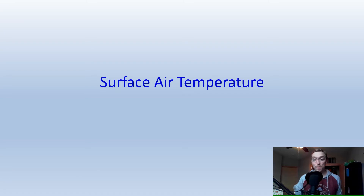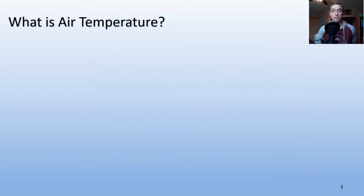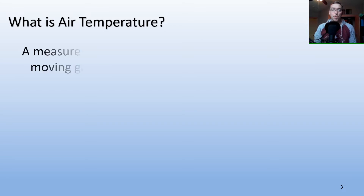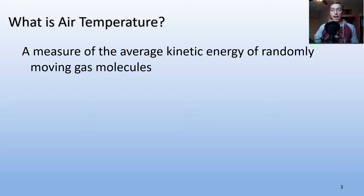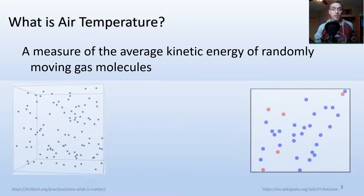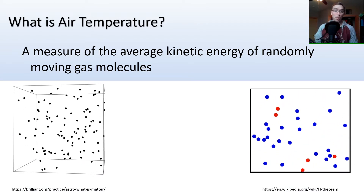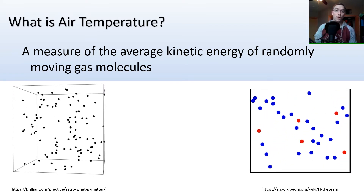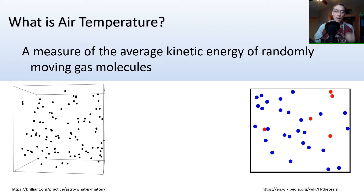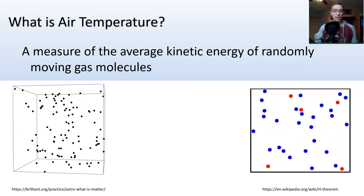We're going to start off by talking about patterns and controls on surface air temperature. So what is air temperature? Simply put, it is a measure of the average kinetic energy of randomly moving gas particles. What we feel as colder temperatures is really just air particles that are not as excited as warmer particles. The left GIF shows a colder air mass with slower moving particles, while the GIF on the right shows a warmer air mass with more excited, faster moving particles.